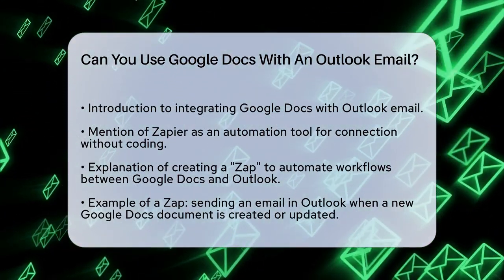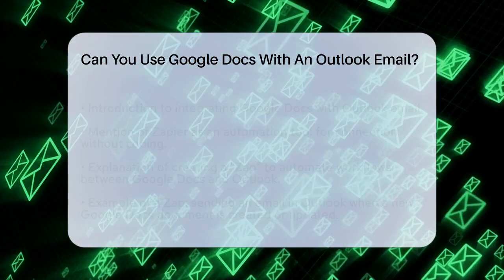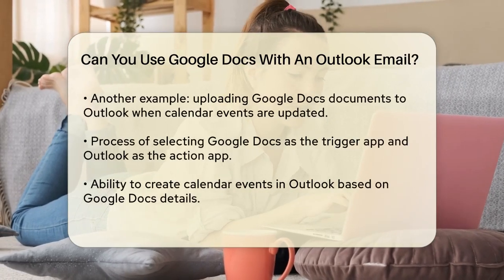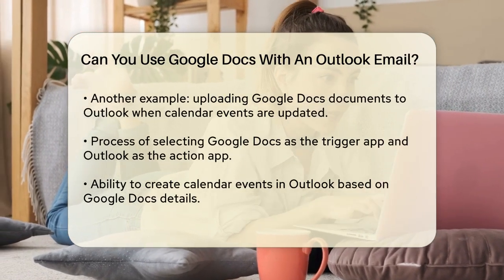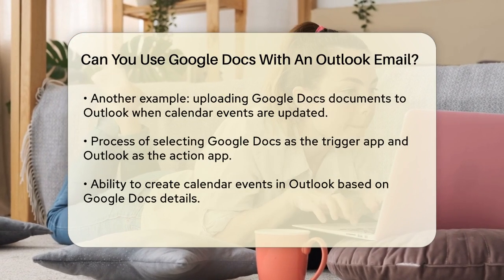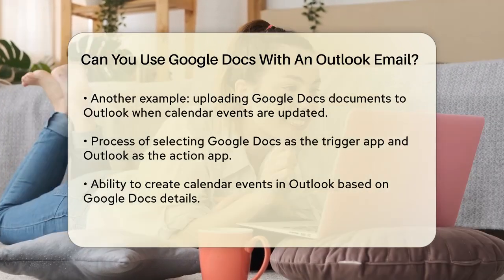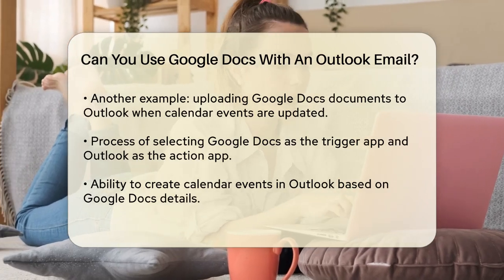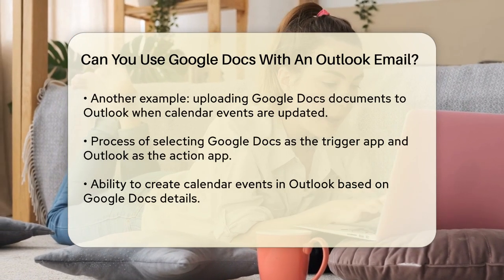Another useful Zap can upload documents from Google Docs to Outlook when calendar events are updated. Here's how it works: you select Google Docs as your trigger app and Microsoft Outlook as your action app. For instance, if you create a new document in Google Docs, you can trigger an action to send an email through Outlook. You can also create calendar events in Outlook based on details from a Google Doc, or even upload new Outlook emails as documents in Google Docs.